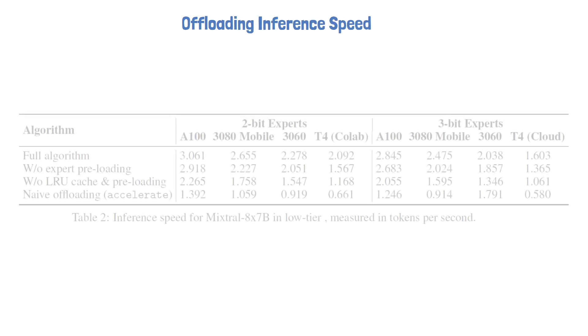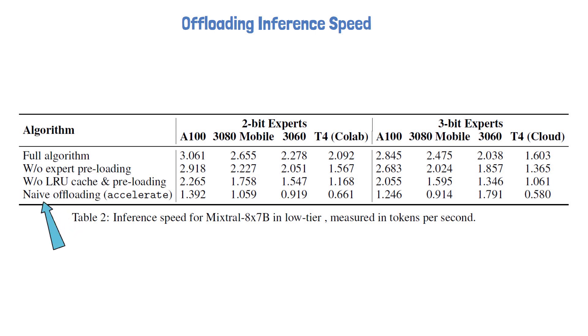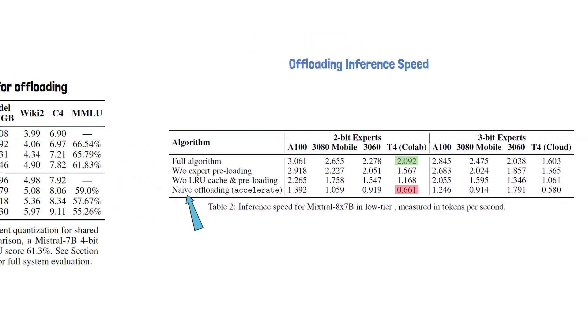Finally, we can see the inference speed when using the offloading method described in the paper. The following table shows results on low-tier GPUs for the two chosen model settings, where each value represents tokens generated per second. Using the full algorithm with 2-bit experts, we reach inference speeds between 2 to 3 tokens per second. The bottom row shows naive offloading results — loading the entire layer's experts when needed — which is significantly slower. Specifically for Google Colab, the paper's method achieves 2 tokens per second compared to 0.6 without it.